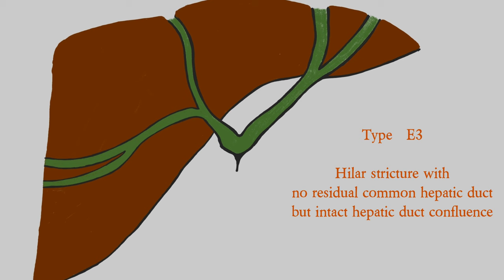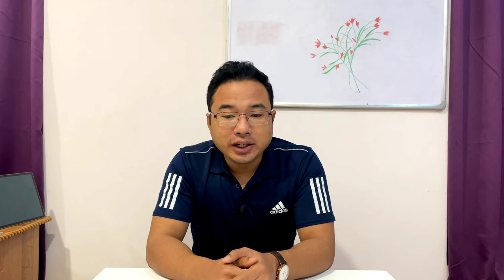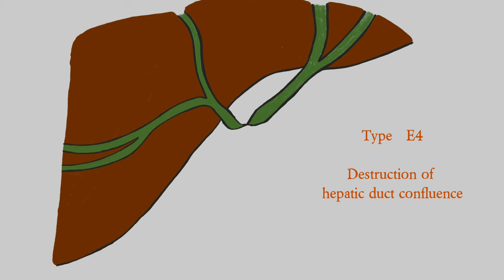It is Type E3 when there is a hilar stricture with no residual common hepatic duct distal to the confluence, but the hepatic duct confluence is still intact. When there is a hilar stricture with destruction of the hepatic duct confluence — the right and left hepatic ducts do not meet because there is a stricture — that is E4.